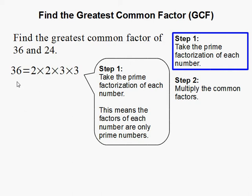So the prime factorization of 36 are 2, 2, 3, and 3. And if you multiply them all together, you're going to get 36.